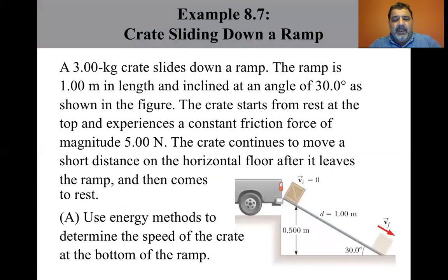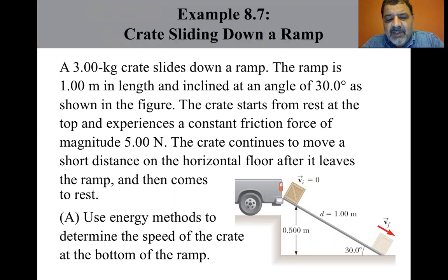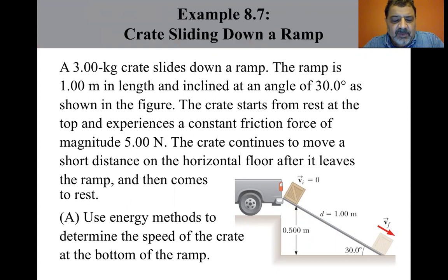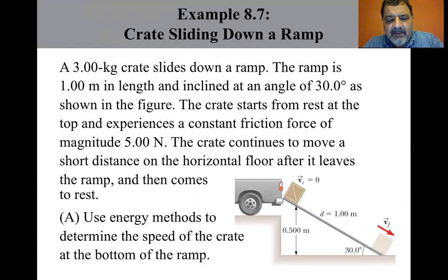Let's look at an example. A three-kilogram crate slides down a ramp. The ramp is one meter in length and inclined at an angle of 30 degrees. The crate starts from rest at the top and experiences a constant friction force of magnitude five newtons. The crate continues to move a short distance on the horizontal floor after it leaves the ramp and then comes to rest. We use energy methods to determine the speed of the crate at the bottom of the ramp.